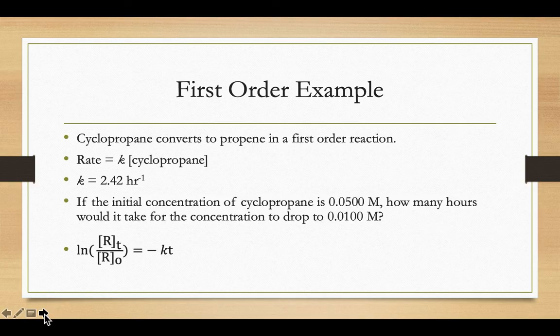So here's an example of a first-order reaction using that integrated rate law. So if you take the chemical cyclopropane and convert it into propene in a first-order reaction, the rate law would be K, our rate law constant, times cyclopropane to the imaginary first power. If our K value was inverse hours here, they tell you that the initial concentration of cyclopropane is 0.05 molar. We want to know how much time it would take for that concentration to drop to 0.01 molar. We just substitute in our values for R, cyclopropane's concentration at some time T, and the original concentration.